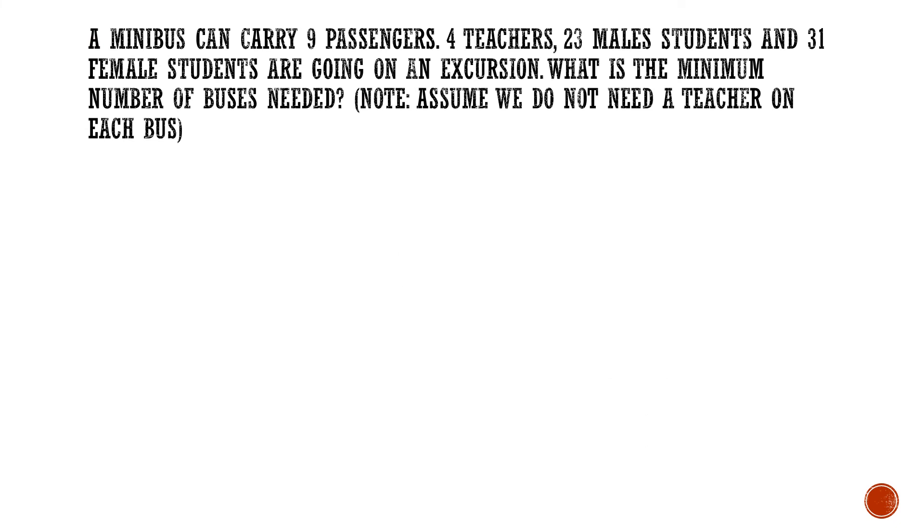Now to the final question. This one, I came out with it myself. It's something similar to what you've done before, but I made it a real world problem. Now a minibus can carry 9 passengers. Remember, this is 9 passengers maximum. So can the bus hold less than 9? Can. No problem. It can even be an empty bus, but that will be a waste of money. Now 4 teachers, 23 male students and 31 female students are going on an excursion. I wrote all this out to confuse the students. But actually at the end of the day, it doesn't matter if it's a teacher, student, male or female is still a passenger. So you just have to find the total. What is the minimum number of buses needed? I'm going to just do the workings for the first step, which is to find the total number of passengers. You will notice that the total number of passengers is 4 plus 23 plus 31, which is 58.